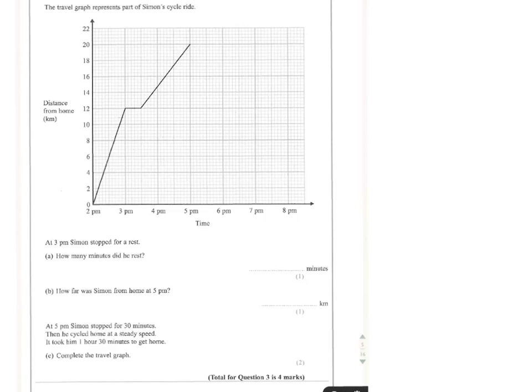So the travel graph represents part of Simon's cycle ride. At 3pm, Simon stopped for a rest. That's 3pm, so he stops for a rest with a flat line.